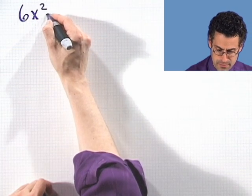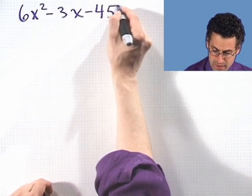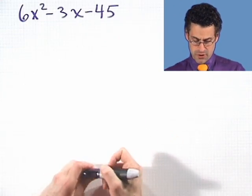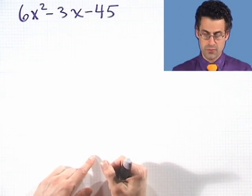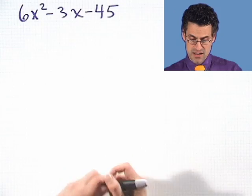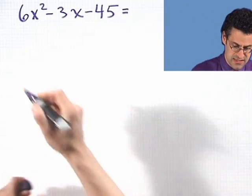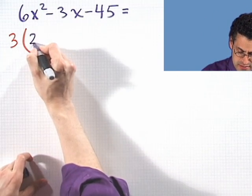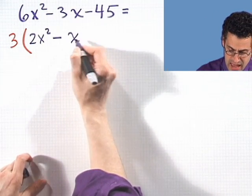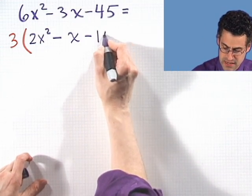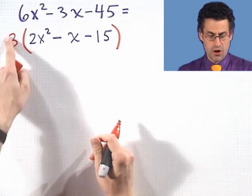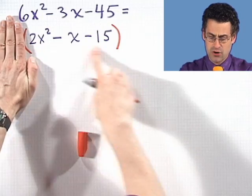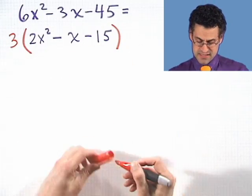Let's try one more: 6x squared minus 3x minus 45. First, I look at a, b, and c and see if they have a common factor other than 1. In fact, each one has a factor of 3, so I should first factor out that greatest common factor of 3. Pulling out the 3, I'm left with 2x squared minus x minus 15. I hold that 3 factor out to the side — that's already taken care of — and now my goal is to factor the expression inside.